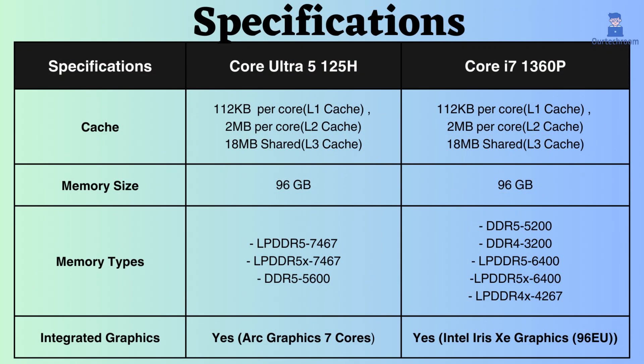Both processors have the same cache size: 1-1-2KB per core for L1 cache, 2MB per core for L2 cache, and an 18MB shared L3 cache.